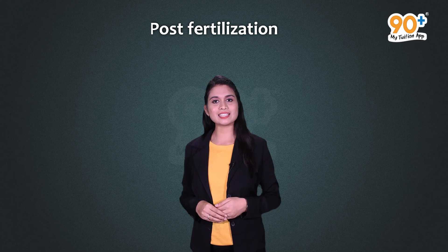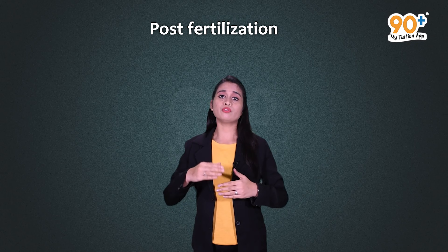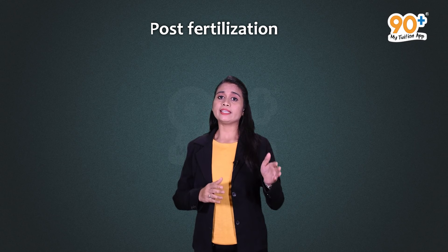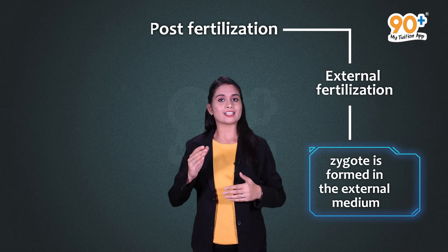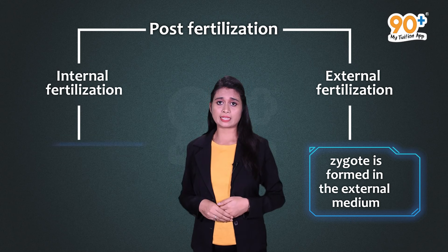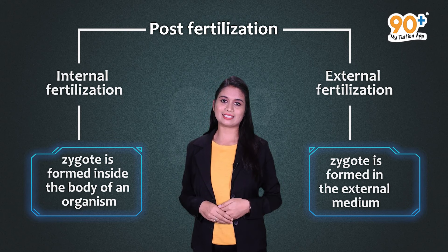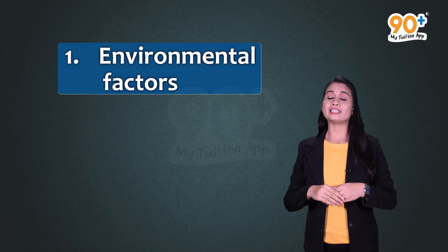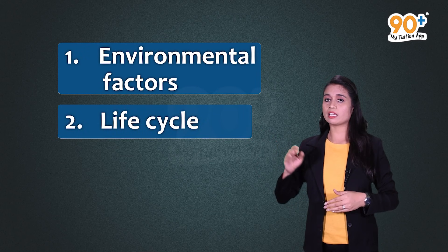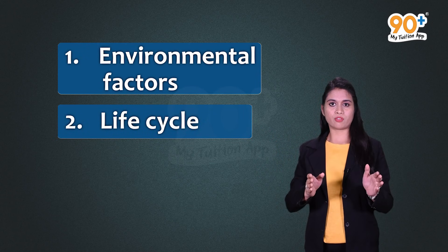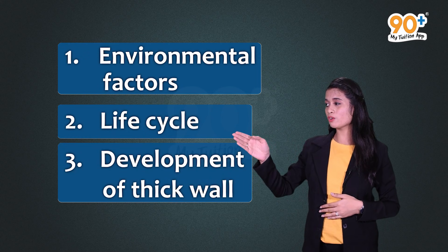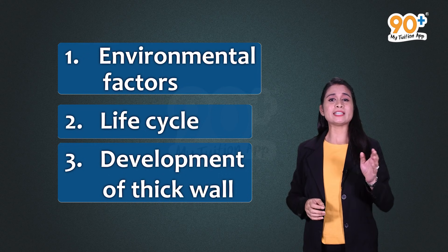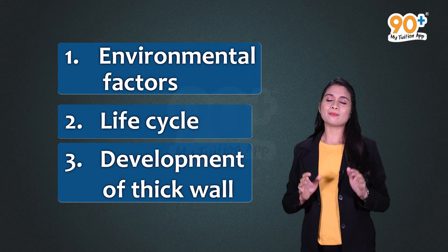The changes that occur after fertilization lead to the formation of a zygote. In external fertilization, the zygote is formed in an external medium; in internal fertilization, it is formed inside the body. The development of the zygote highly depends upon environmental factors. In organisms like fungi and algae, a thick wall develops around the zygote to resist damage and desiccation, and the zygote undergoes a period of rest before germination.